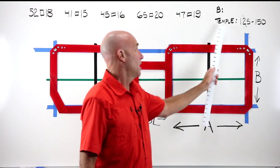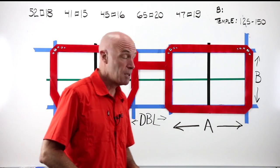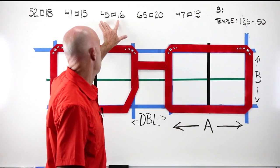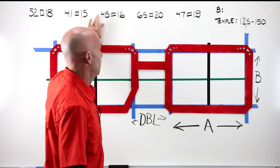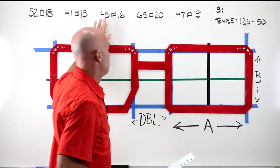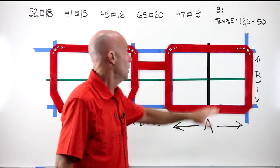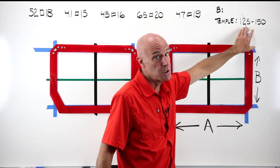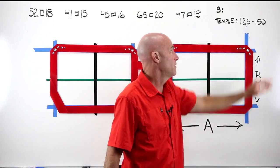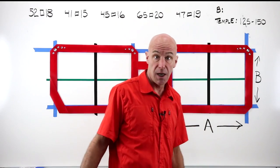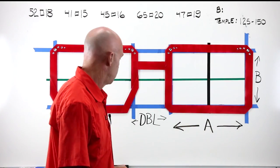The other thing that makes up a frame size is the temple length. So sometimes you'll see 45, 16, and then a B, 20, whatever it might be, and then a temple length. Usually runs between 125 and 150. 125 being a really pretty small child's frame. 150 being a really big guy frame. Usually they're right around 140.